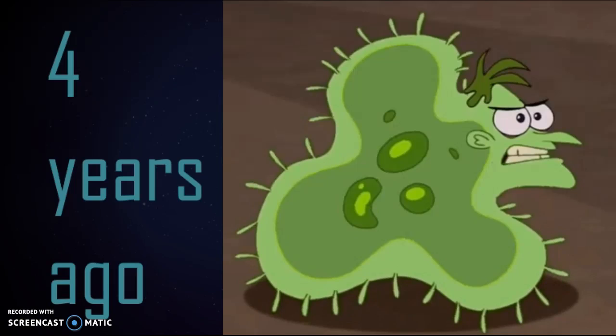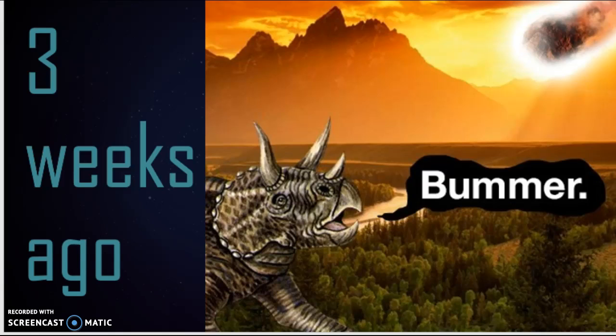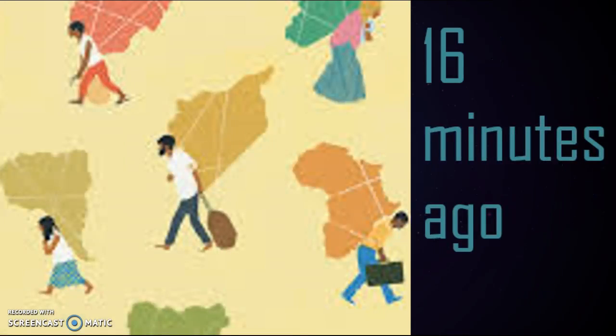About six months ago, the dinosaurs arrived. Three weeks ago, the dinosaurs went extinct. Three days ago, chimpanzees and their last shared ancestors split their ways. 16 minutes ago, humans started migrating.